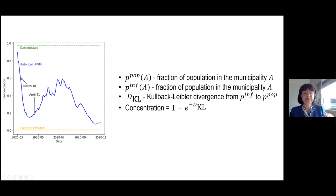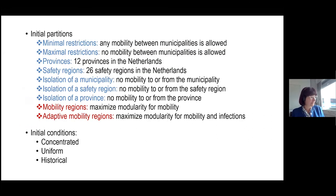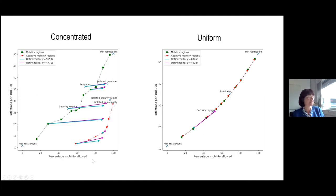So I hope now you have understood all the components that we did optimization. We try to find the best partition. We have several possible partitions and our goal is to restrict mobility as less as possible and prevent as many as possible infections. So, and this is what we have done. We have tried several initial partitions, our partitions that we suggested, but also provinces, also no mobility, also all possible mobility, and also isolation of one safety region or one province or one municipality. And we can see compared initial conditions, which are completely concentrated, completely unconcentrated and historical. And now I will tell you as a result.